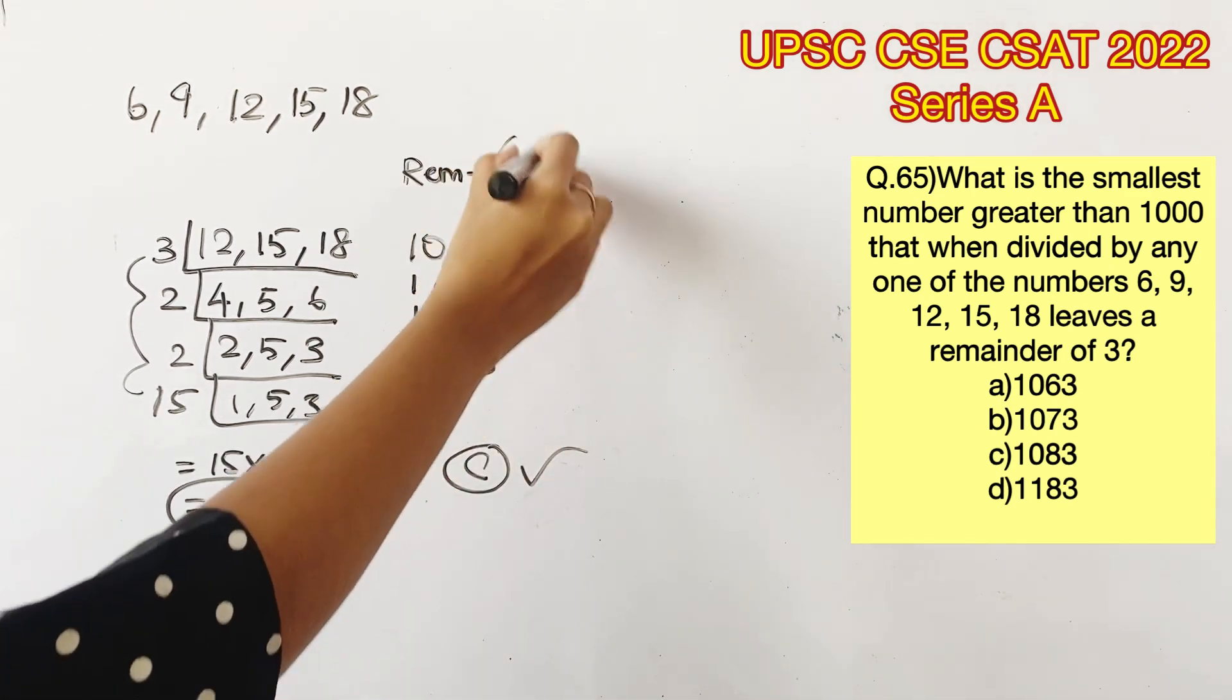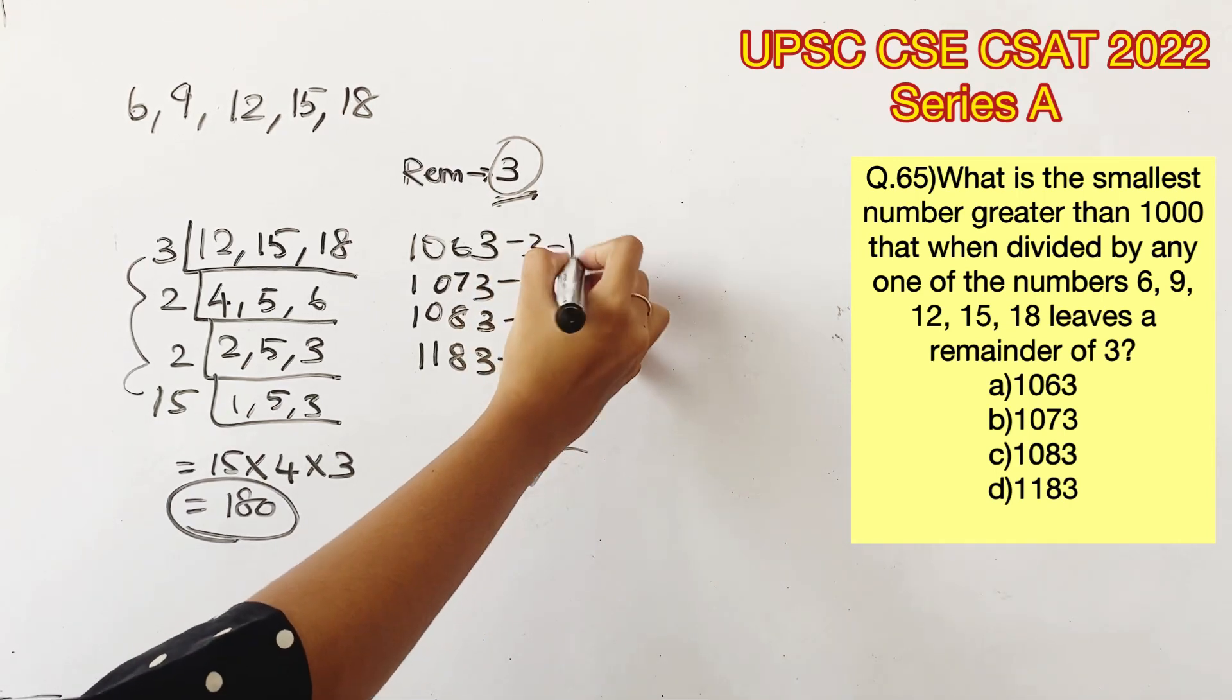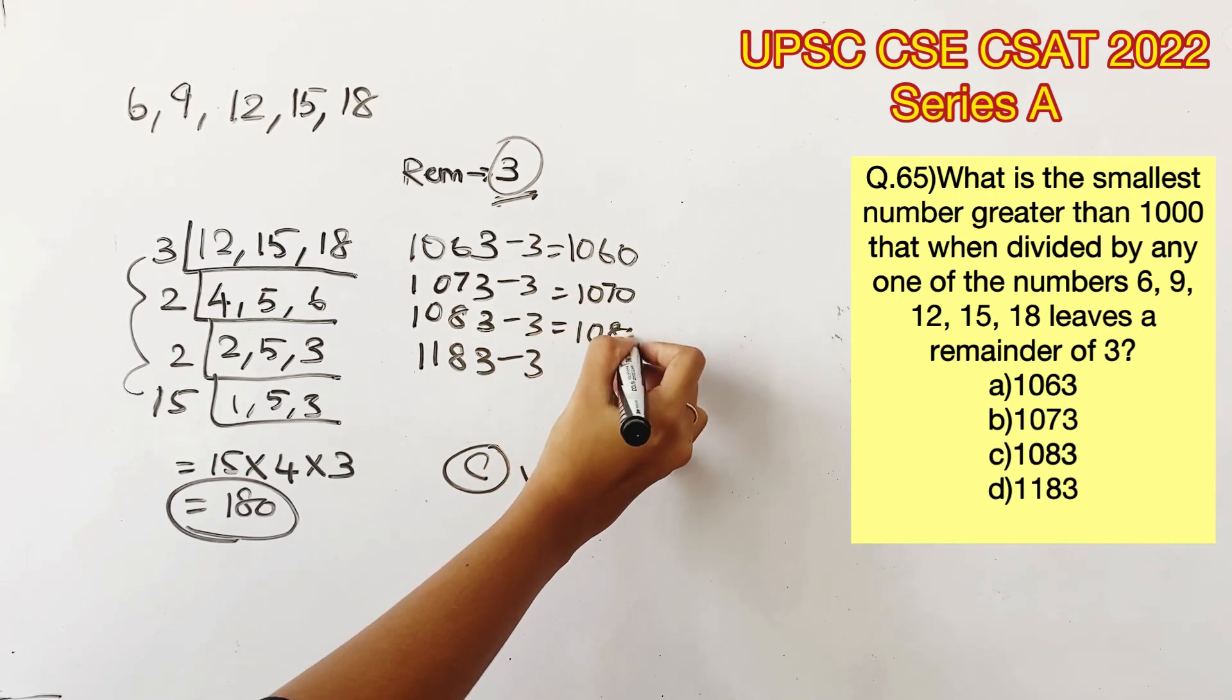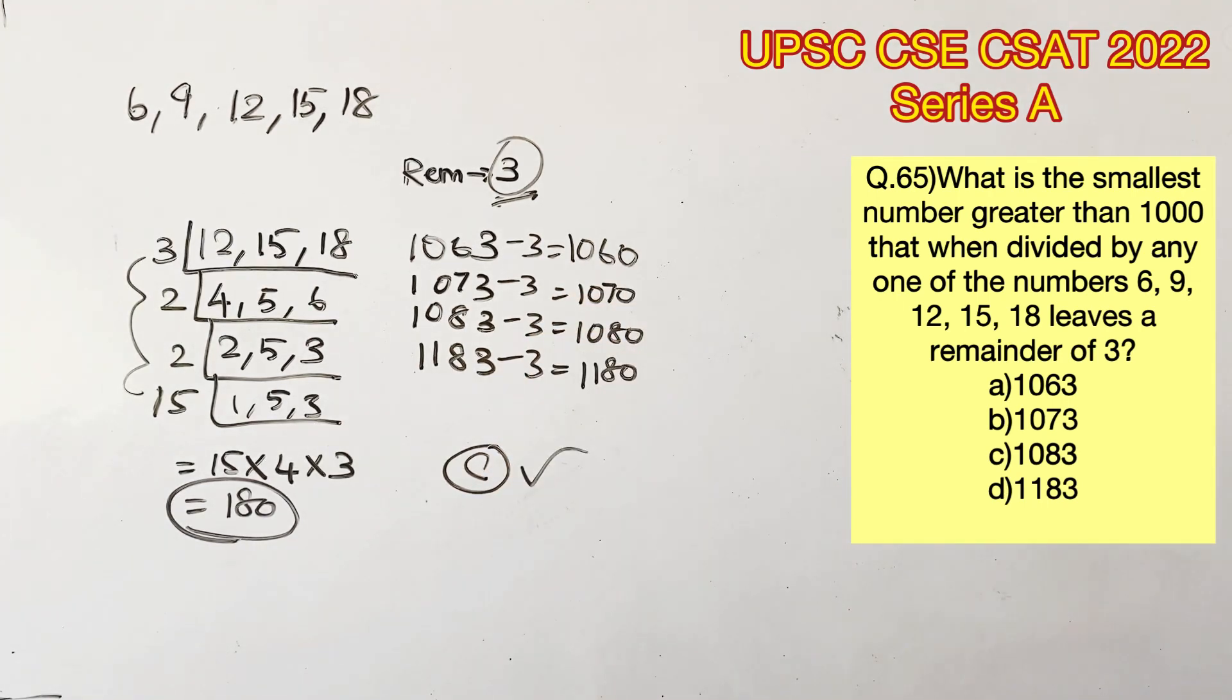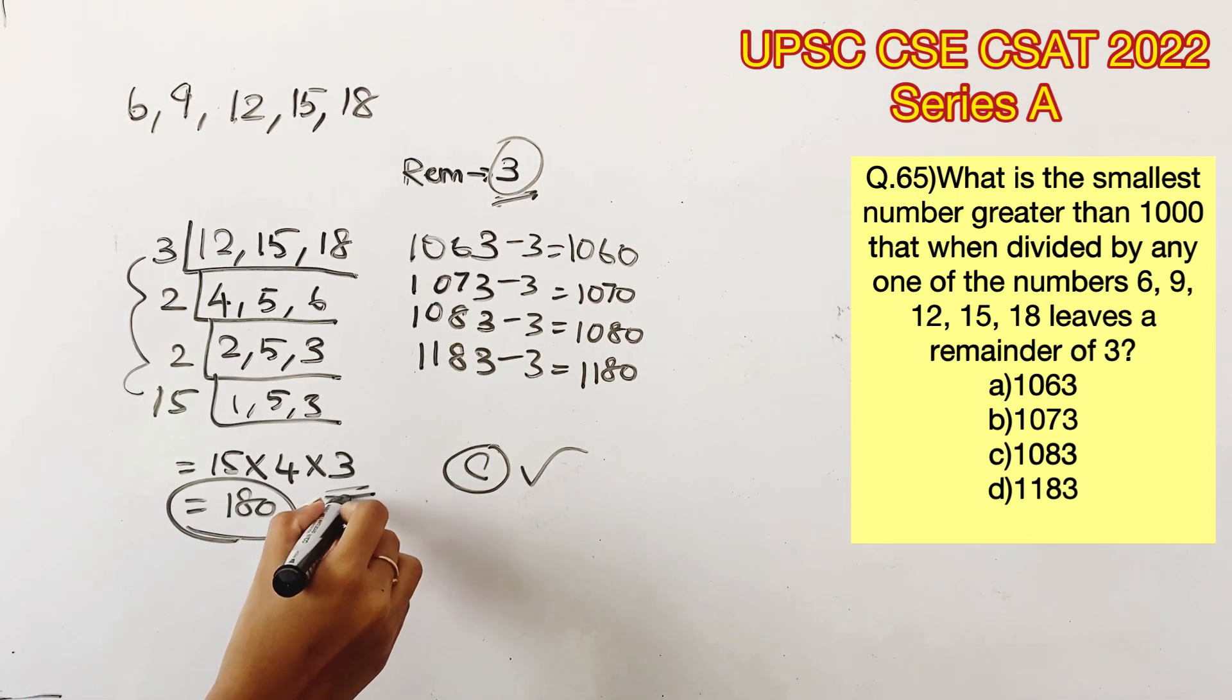Since the remainder is given as 3, we know that the number which is completely divisible by 3 should be 3 less than the options given. So I'm subtracting 3 from all the options. I'll get 1060, 1070, 1080, and 1180. We know that the LCM that we got is a multiple of 3.